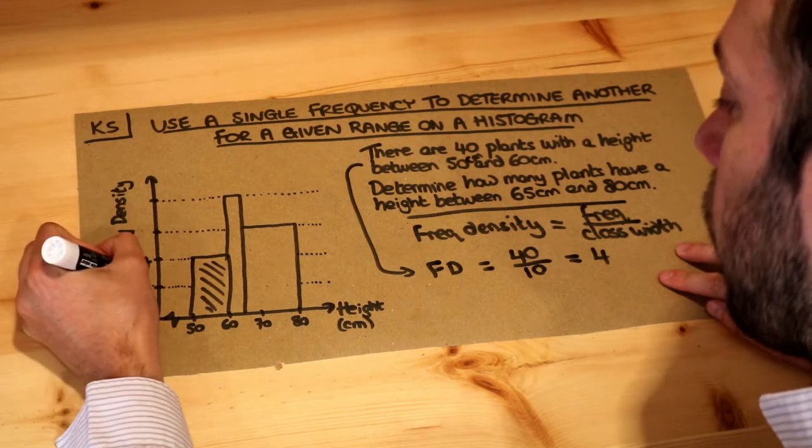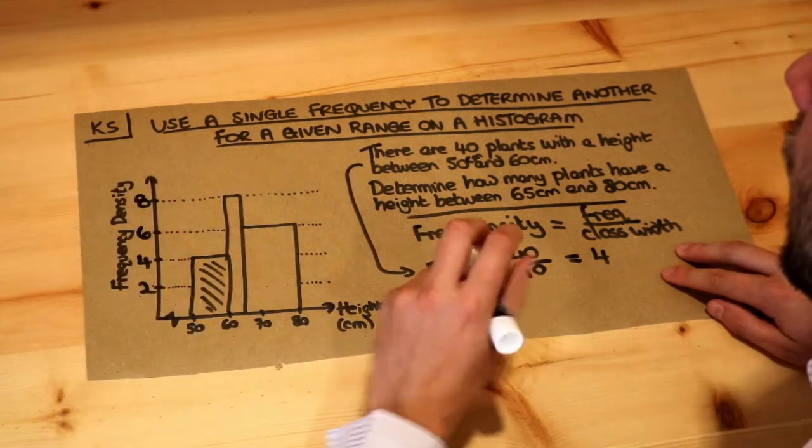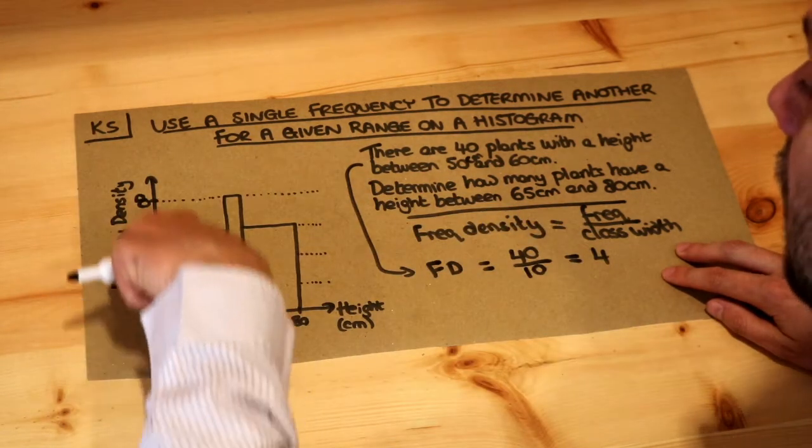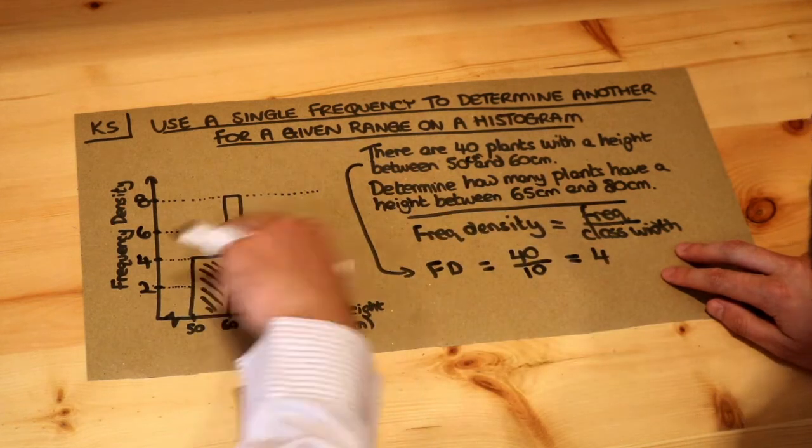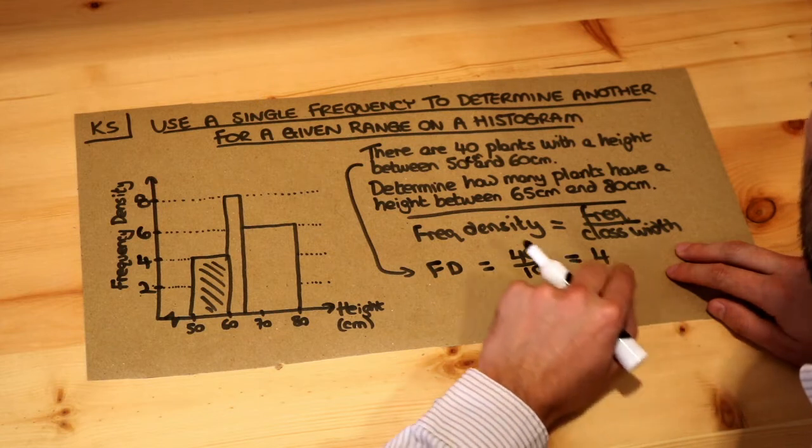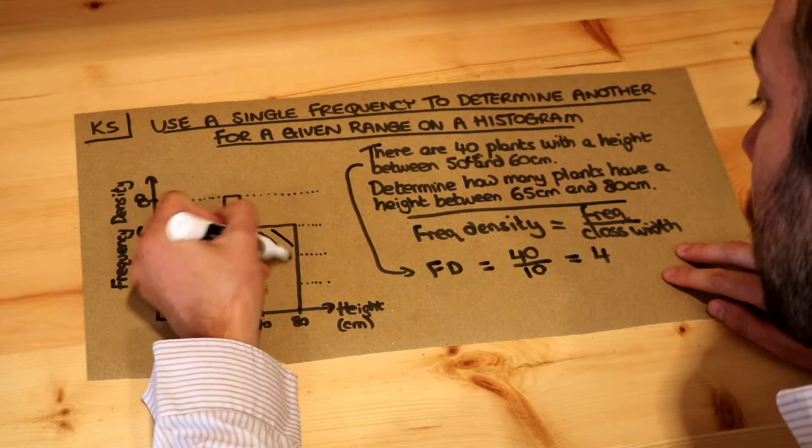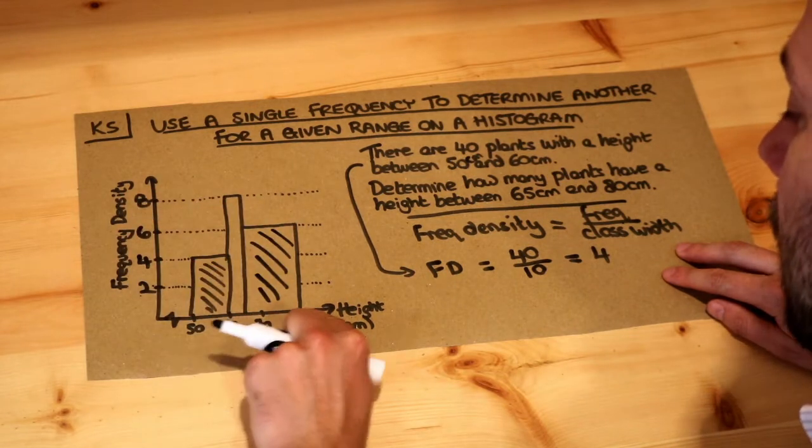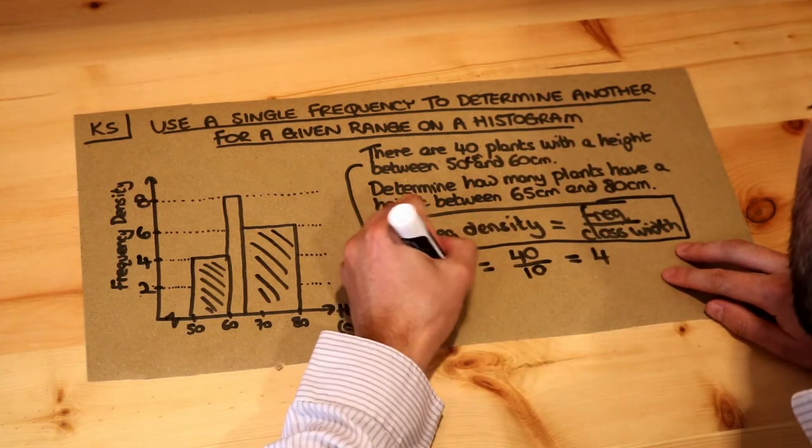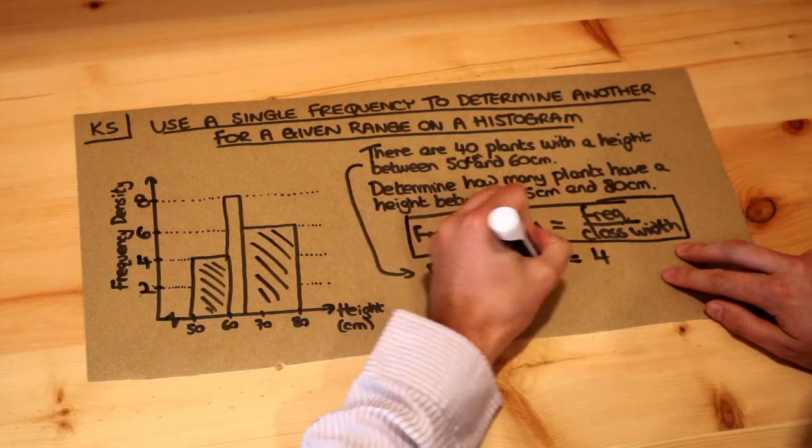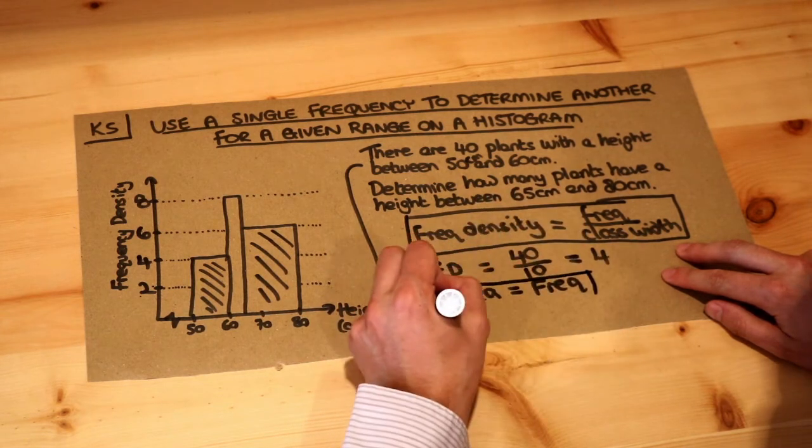Now if 4 is two squares up, then one square up must be 2, so it must be going 2, 4, 6, 8, etc. And now because we've got this entire scale on the frequency density axis, we can now work out different frequencies within the histogram. So determine how many plants have a height between 65 centimeters and 80 centimeters—so that's this bar here, that's between 65 centimeters and 80 centimeters. Now do you remember from my second video on histograms that the area of a bar is equal to the frequency?